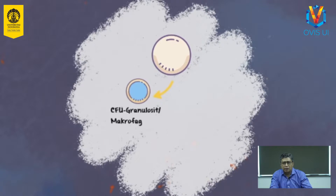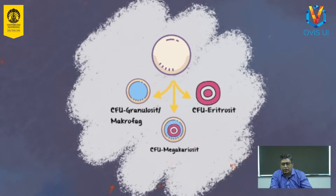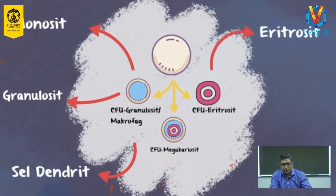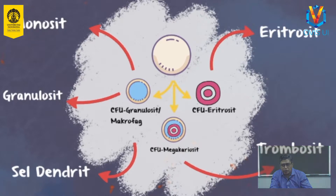CFU spleen akan berdiferensiasi menjadi progenitor CFU blast, yang kemudian akan menjadi CFU eritrosit. Lalu juga berdiferensiasi menjadi CFU granulosit atau makrofag, dan CFU megakaryosit. CFU granulosit atau makrofag merupakan progenitor granulosit, monosit, dan makrofag. Sementara CFU megakaryosit merupakan progenitor trombosit. Laju produksi sel darah diatur sedemikian efisien tergantung dari kebutuhan tubuh. Pada keadaan normal, laju destruksi sel darah seimbang dengan laju produksi sel darah baru.